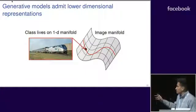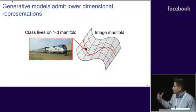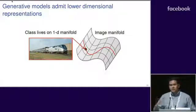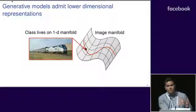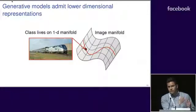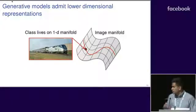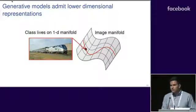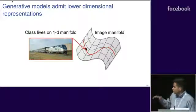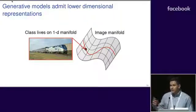As a toy example, suppose we had an image class consisting of images of a single train, the same train, moving in a single direction. All these images are of the same train moving in a single direction on this railroad. So there's really only one degree of freedom in this image class. We could think of this image class as living on a one-dimensional manifold in natural image space.